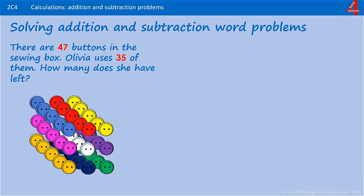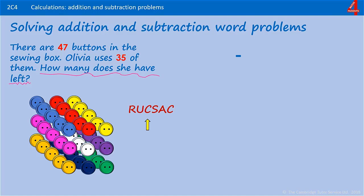And here is one for you to try. Using Rucksack, pause the video and have a go. There are 47 buttons in the sewing box. Olivia uses 35 of them. How many does she have left? Understanding what the question is asking you to do: how many does she have left? The clue here tells us that we need to choose subtraction. She started with 47 buttons and she took away 35.